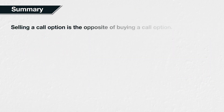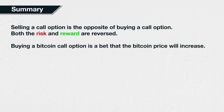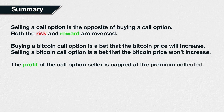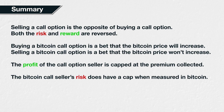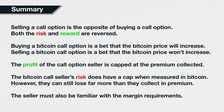In summary, selling a cryptocurrency call option is the opposite of buying a cryptocurrency call option — both the risk and reward are reversed. Any profit for the seller is a loss for the buyer, and vice versa. Buying a Bitcoin call option is a bet that the underlying price of Bitcoin will increase, and selling a Bitcoin call option is a bet that the underlying price of Bitcoin will not increase, or at least not increase beyond the strike price. The seller of a Bitcoin call option has a limited profit potential; their maximum profit is the premium they collected. As we're using Bitcoin itself as collateral instead of dollars, the seller's risk does have a cap when measured in Bitcoin. However, they can still potentially lose far more than they collected in premium. The seller must also be familiar with the margin requirements for short option positions. When you're brand new to options, it's best to wait until you're confident you have sufficient knowledge of the risks before selling options.